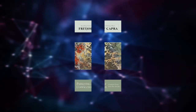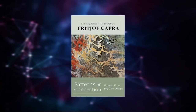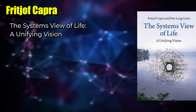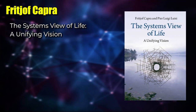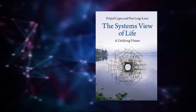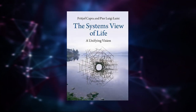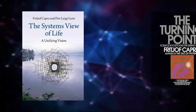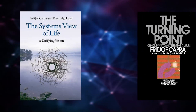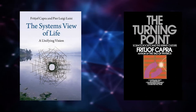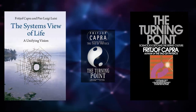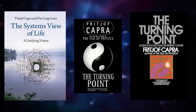One person who recognised this years ago and described the world as a vast integrated system is Fritjof Capra. Capra realised that we do not understand just how integrated the systems of the universe are. As he wrote: 'There are solutions to the major problems of our time, some of them even simple, but they require a radical shift in our perceptions, our thinking, our values.' We are now at the beginning of a fundamental change of world view in science and society — a change of paradigms as radical as the Copernican Revolution.